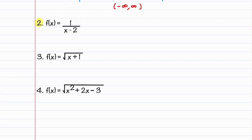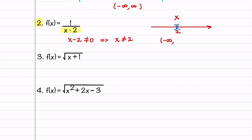Our second example is f(x) equals one divided by x minus two, and this is an example of a rational function. With rational functions, we need to exclude values where the denominator equals zero, because this is where the function is undefined. To find the domain, we write that x minus two cannot equal zero, which tells us that x cannot equal two. We put x equals two on a number line — that number is not included — so our interval is minus infinity to two, union two to infinity.